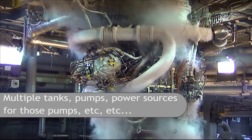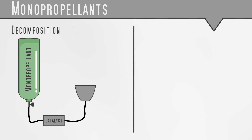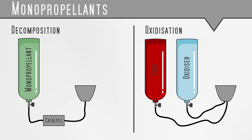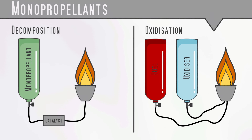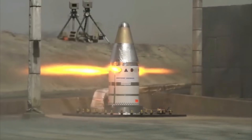This is where monopropellants come in. A monopropellant is a type of propellant that releases energy through decomposition instead of oxidization. This means, instead of burning the fuel, it is passed over a catalyst, which causes the monopropellant to decompose into a variety of hot gases. These gases expand, delivering thrust. Ta-da! One rocket.